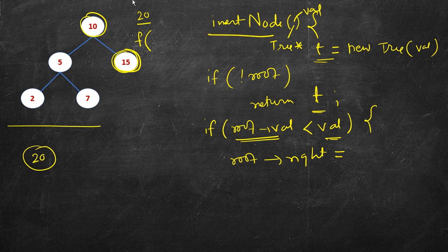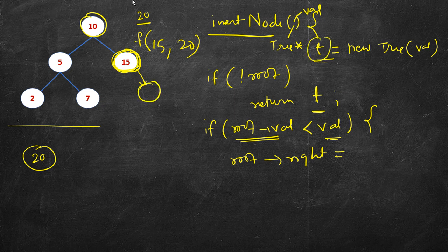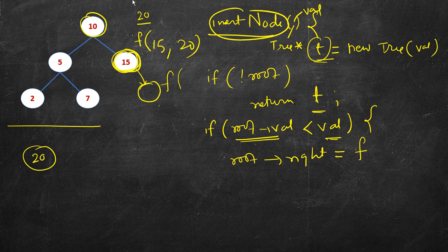We call the same insert node function with the same value but with root changed to 15. Again we check if the right is null — if so, we create the new node t. Otherwise we call the same function on its right child. Root's right is set equal to that function, written here as f, called on root's right with the same value. This returns the new root of the right subtree.